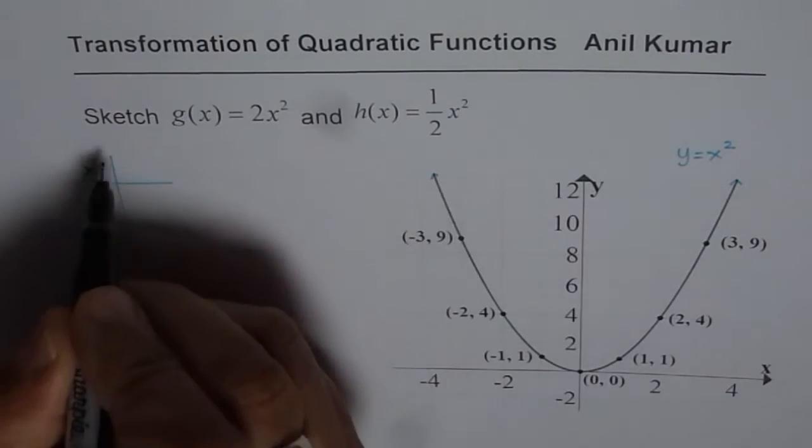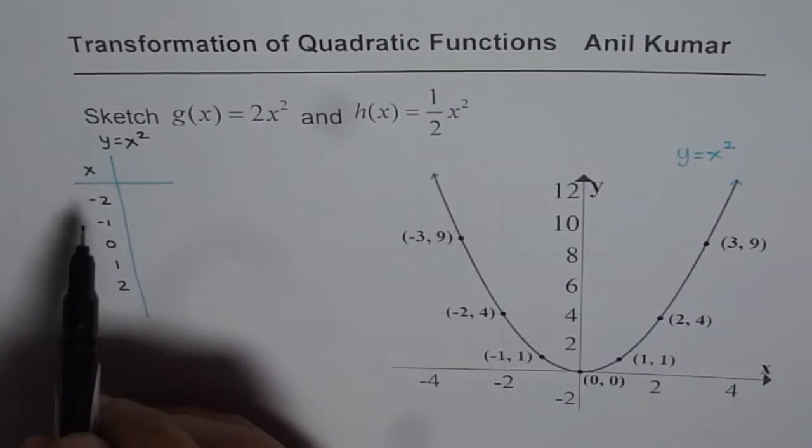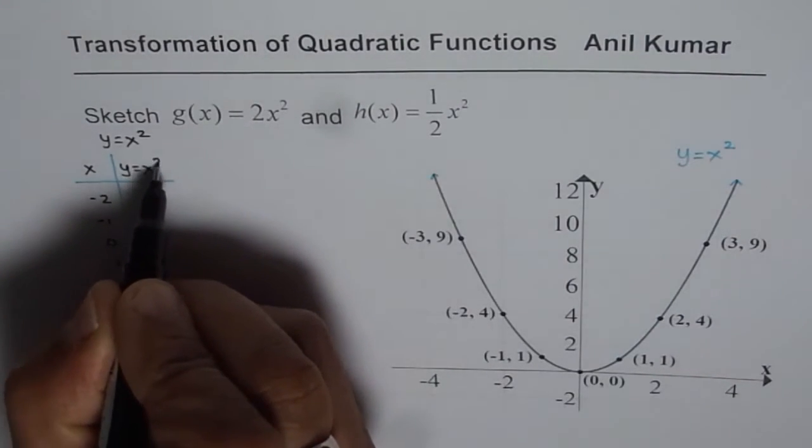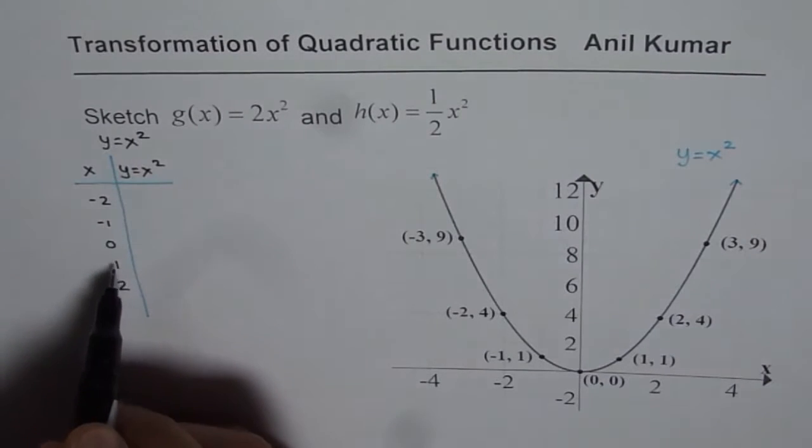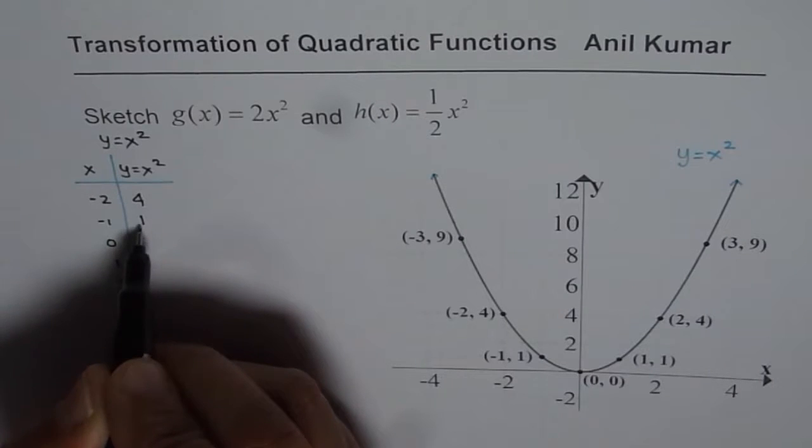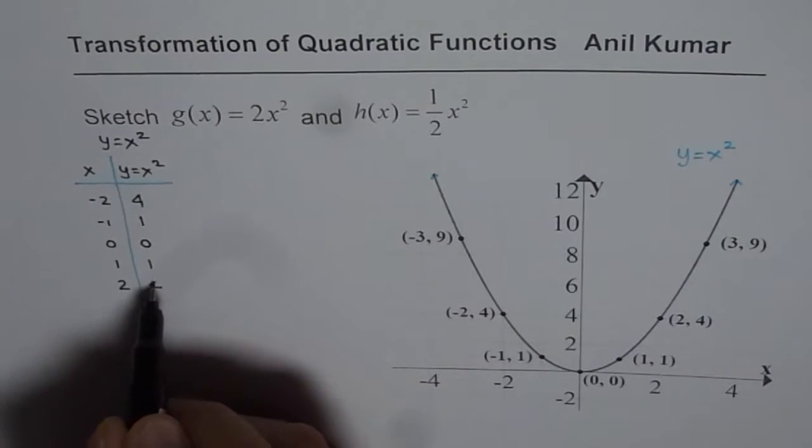We are trying to sketch y equals to x square first. To get the value we will just square these numbers. Minus 2 square is 4. Minus 1 square is 1. 0 square is 0. 1 square is 1. 2 square is 4.